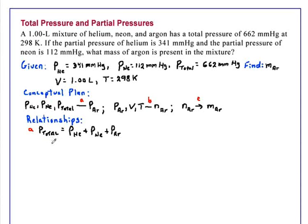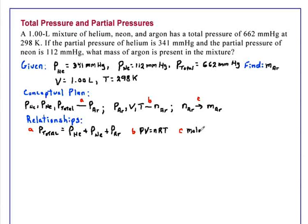The second relationship, B, is the ideal gas law: PV equals nRT. Our third relationship is the molar mass of argon, which we find on the periodic table to be 39.95 grams per mole.